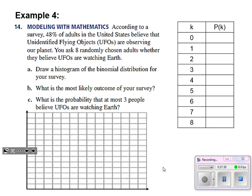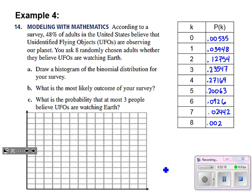So for zero, zero successes in my eight people that I questioned, that was 0.00535. Probability that one of those eight people says yes is 0.03948. Two people, I got 0.12754. Three people, it's 0.23547. Four people is 0.27169. Five people, 0.20063. Six people, 0.0926. Seven people, 0.02442. And all eight people believing that we're being watched, 0.00282.